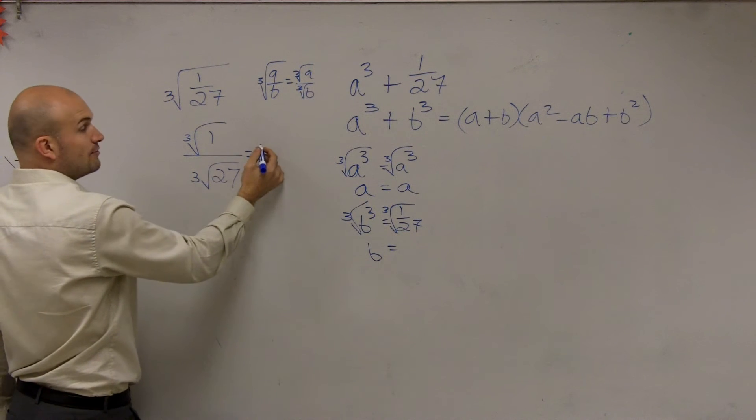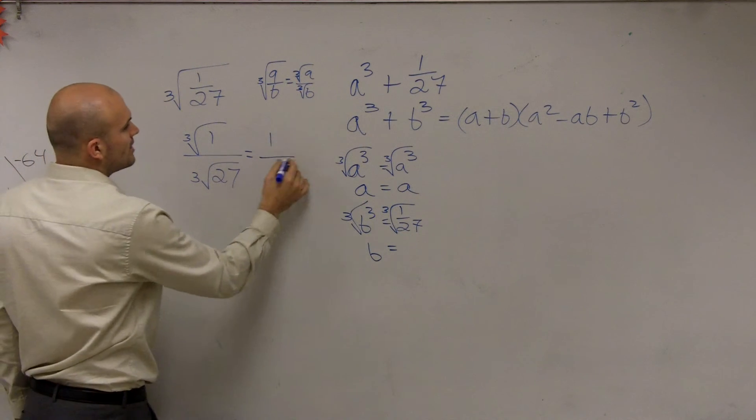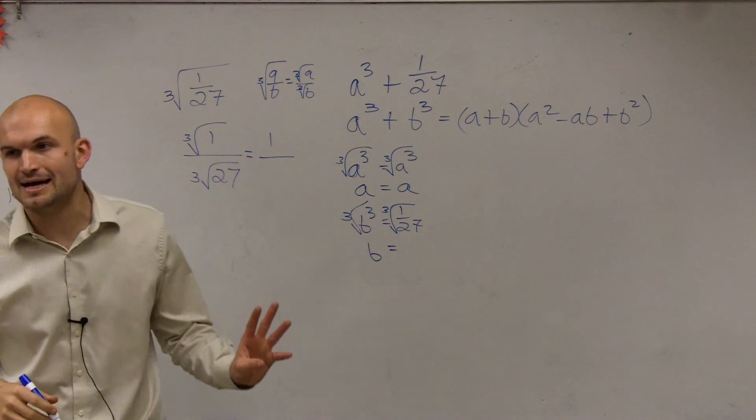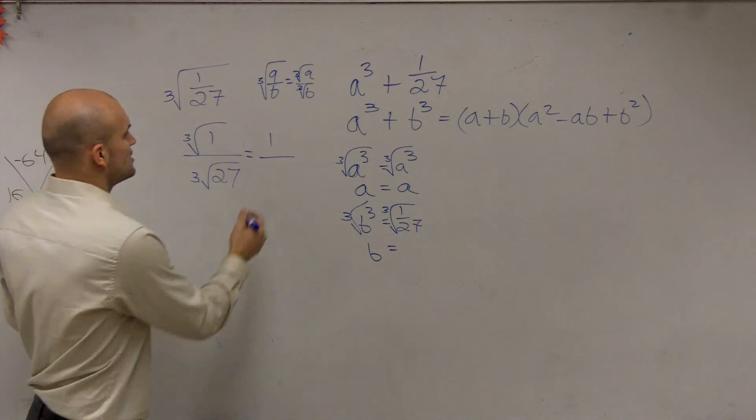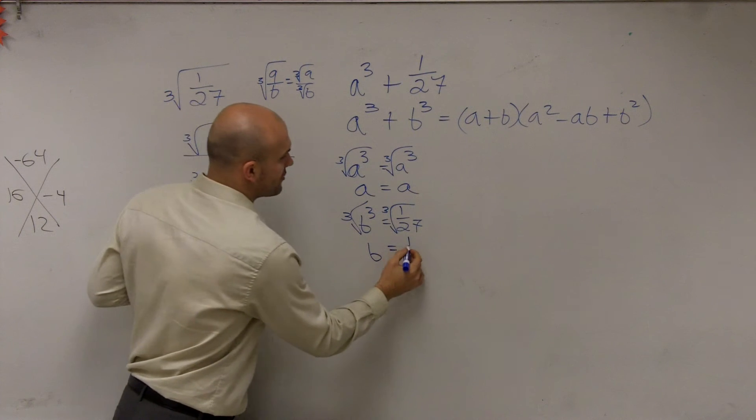The cube root of 1, which is 1 times 1 times 1, gives us 1. And what number multiplies by itself three times to give us 27? 3. Therefore, our answer is 1/3.